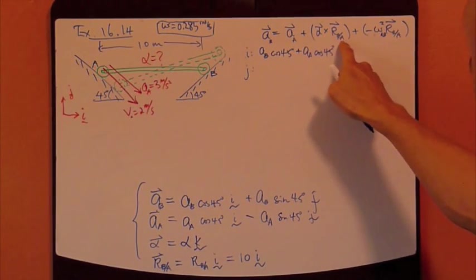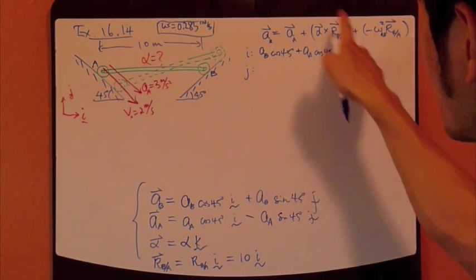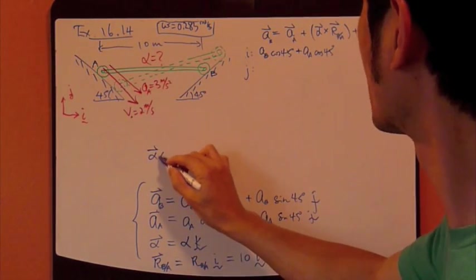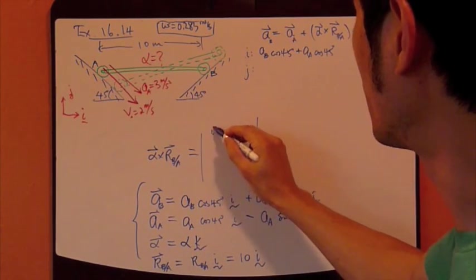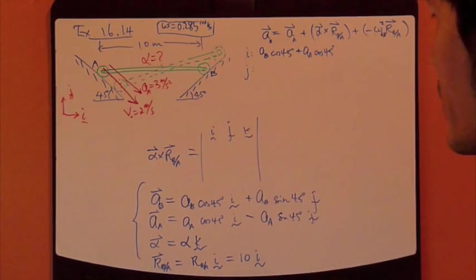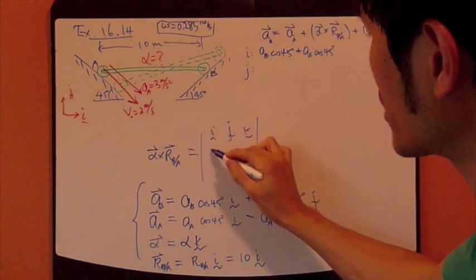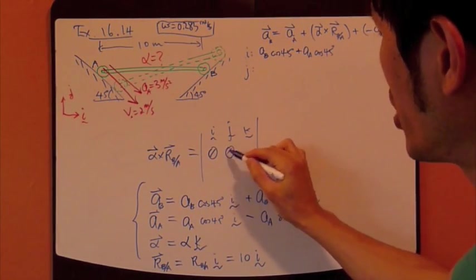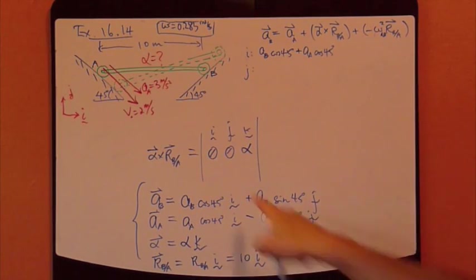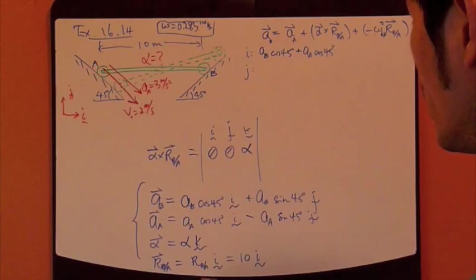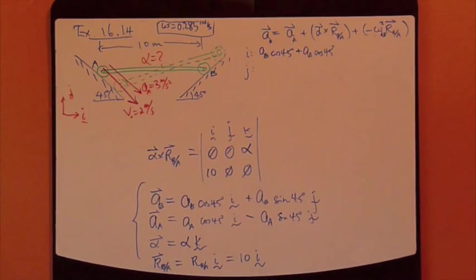Vector A cross with vector B. It simply is using determinant. So this cross product right there, cross determinant, we have I, J, K. And then the second row is just a component of alpha, and alpha is only in the K direction. So the I component is 0, J component is 0, and the K component is alpha magnitude. The third row is the component. The third row is the component of this R right there, which is 10I, and then 0J, 0K.